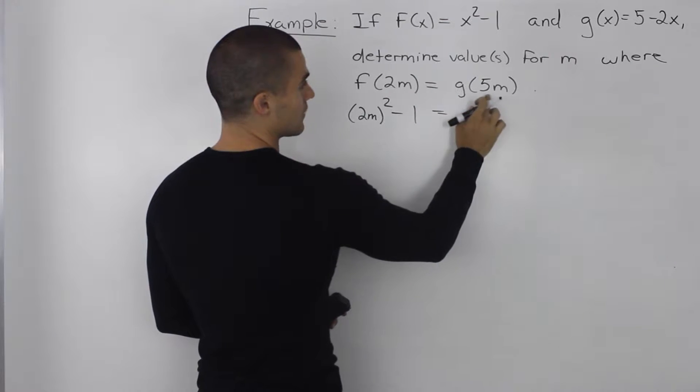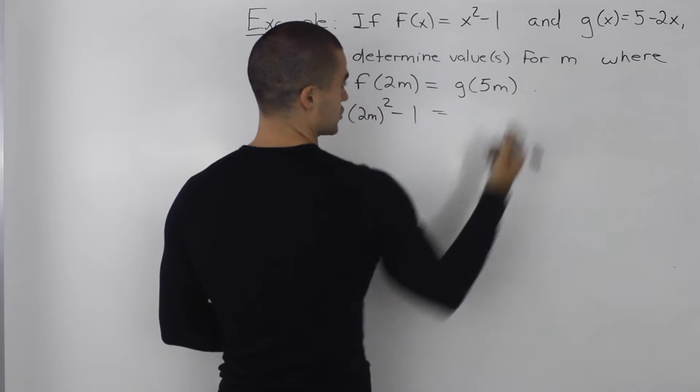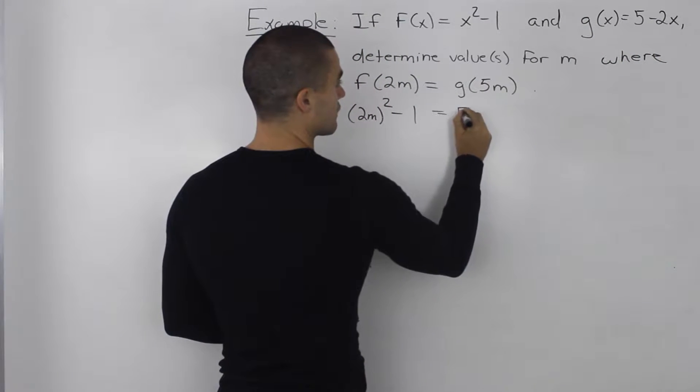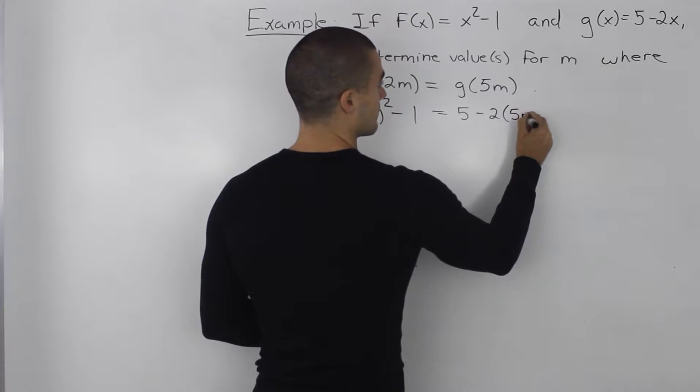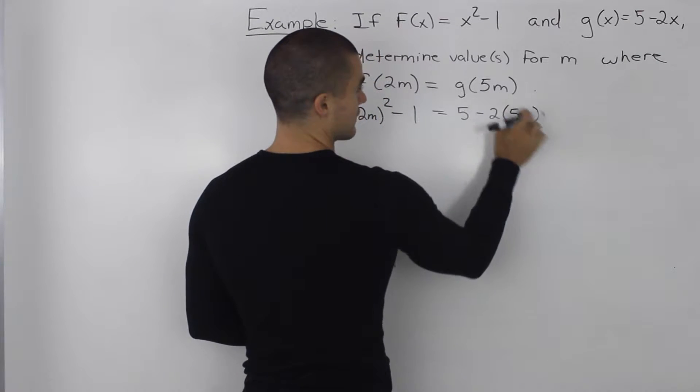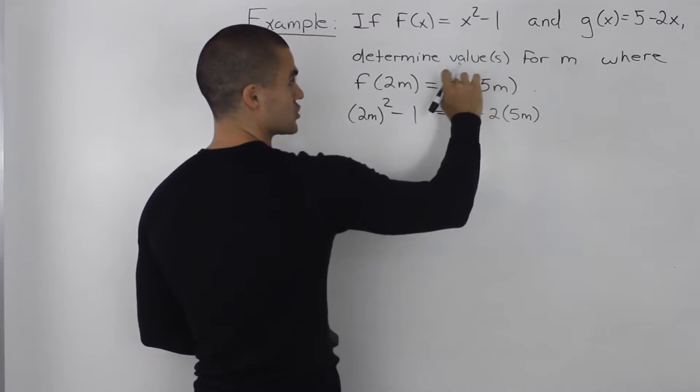And then for the right side, we take 5m and plug it in for the x values for the function g of x. So we'd have 5 minus 2 times 5m. Again, we took this 5m and plugged it in for the x value in this function g of x.